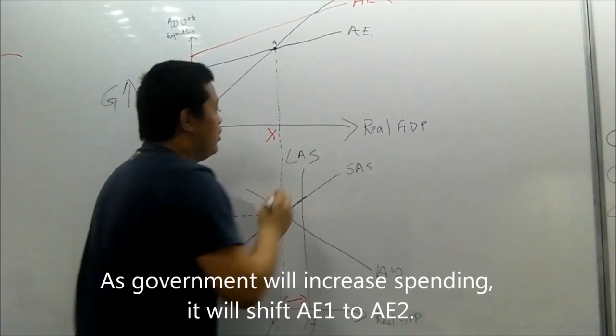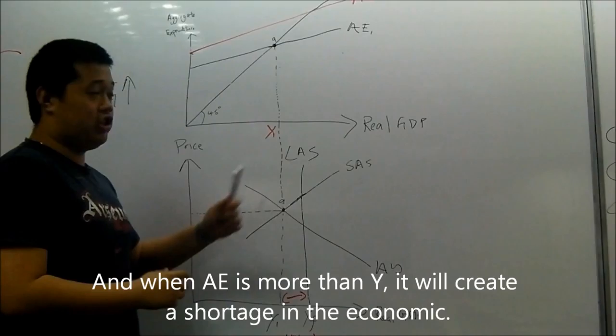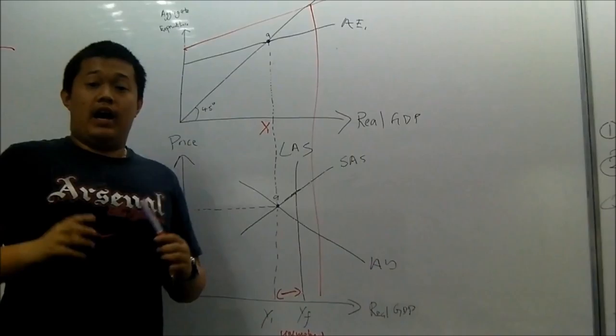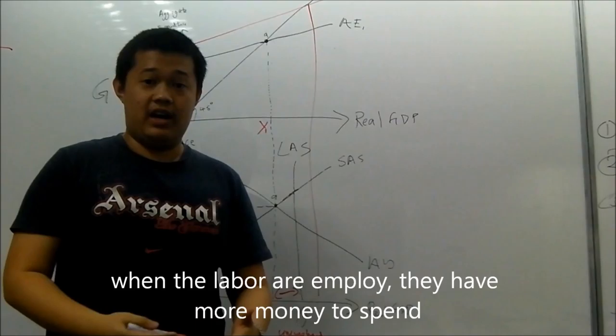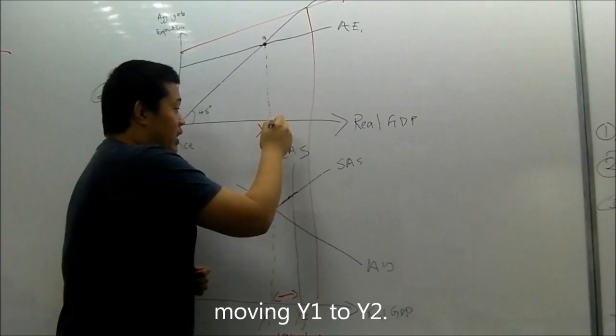As you can see, this is an income-expenditure and AD-AS graph. When the economy is under recession, as government increases spending, it will shift AE1 to AE2. And when AE is more than Y, it will create a shortage in the economy, triggering the firm to employ more labor and resources.